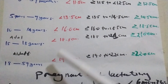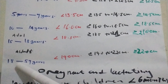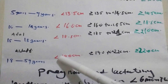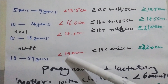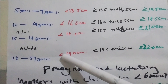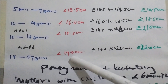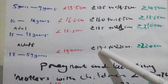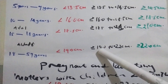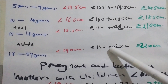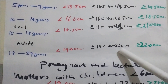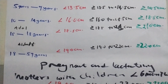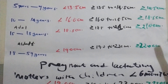For adults, aged 18 to 59 years: severe acute malnutrition is below 19.0 centimeters. Moderate acute malnutrition is 19.0 centimeters to 22.0 centimeters. Normal starts from 22.0 centimeters and above.